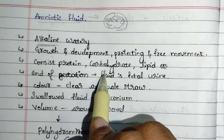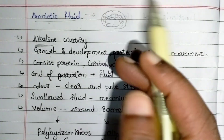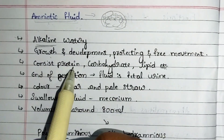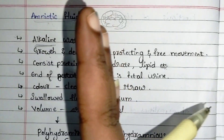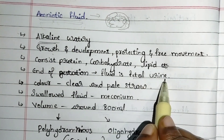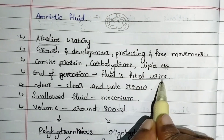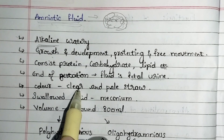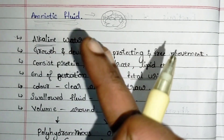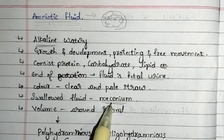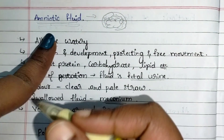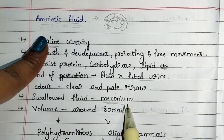Amniotic fluid consists of proteins, carbohydrates, and lipids. At the very beginning of pregnancy, it is filled with these nutrients, but by the end of gestation — around the eighth and ninth month — the amniotic fluid is mostly fetal urine. The normal color of amniotic fluid is clear or pale straw color. After birth, the baby passes its first stool called meconium, which is formed from the amniotic fluid the baby inhaled during the gestation period.